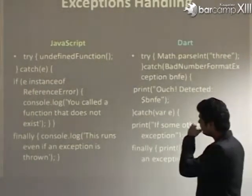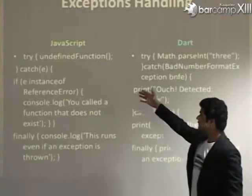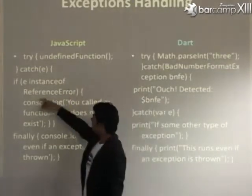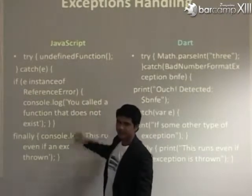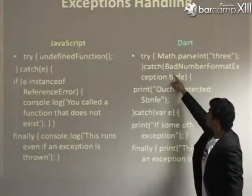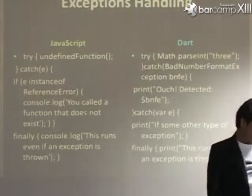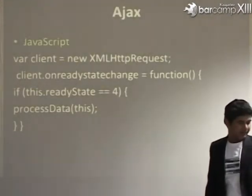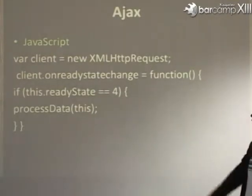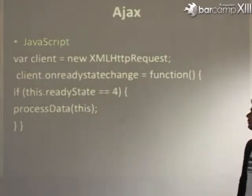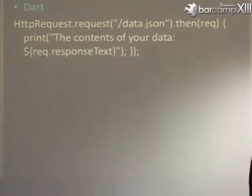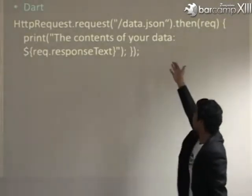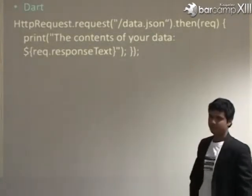Exception handling — there are no predefined exceptions in JavaScript, and if any exception is thrown you always have to check with instanceof error and handle it manually. But in Dart, try and catch are given, so you can simply use try-catch to handle your exceptions. For AJAX calls — in JavaScript you write several lines of code and then process your response. But in Dart, simply one line: HttpRequest.request, pass your JSON object, and you get your data.